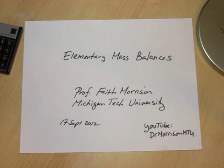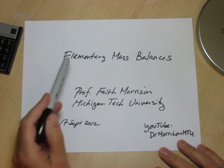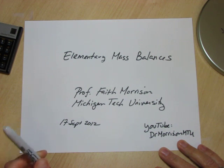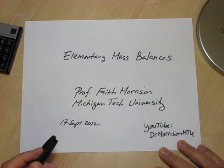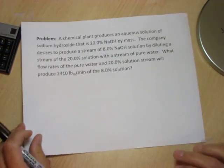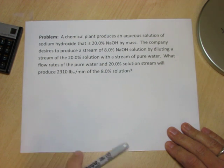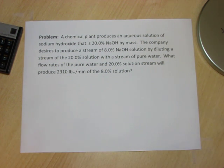I'd like to do a problem in elementary mass balances in order to highlight how to approach a problem beginning with reading the problem, figuring out what it's asking, and carrying out the calculations to completion. The problem I've chosen is not too difficult, but I'm going to be emphasizing the decision making along the way to help a new student figure out how to approach these kind of mass balance problems.